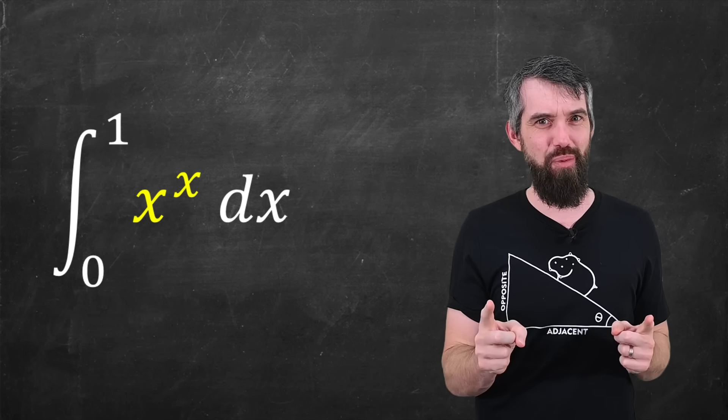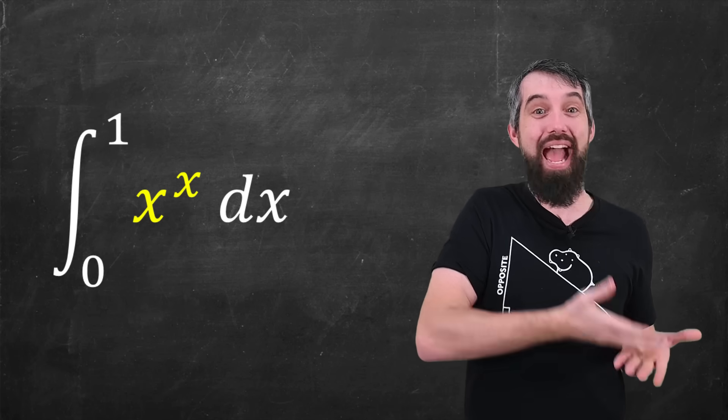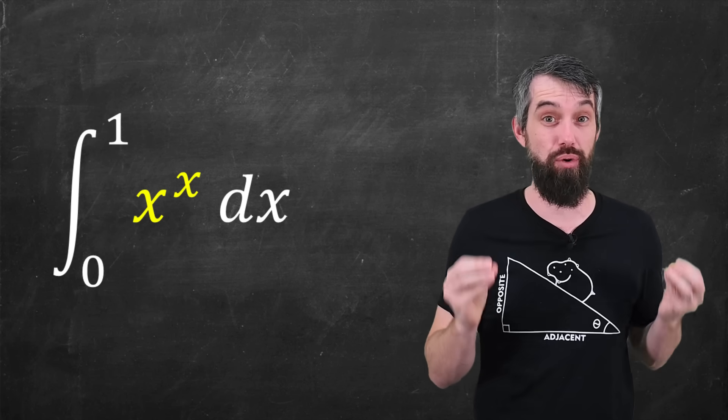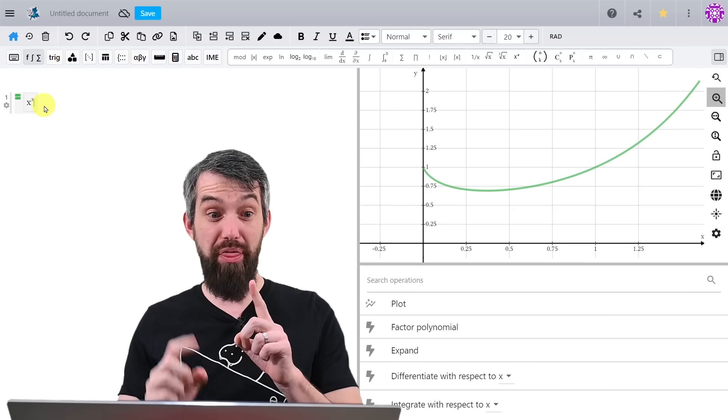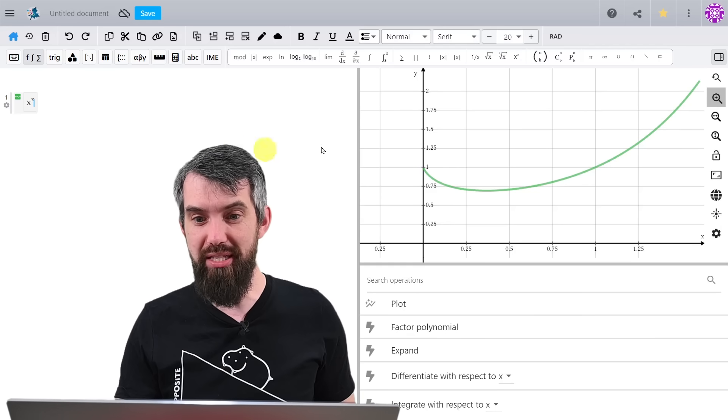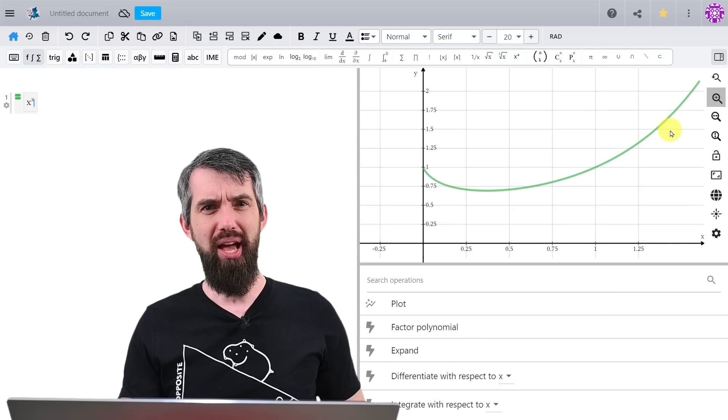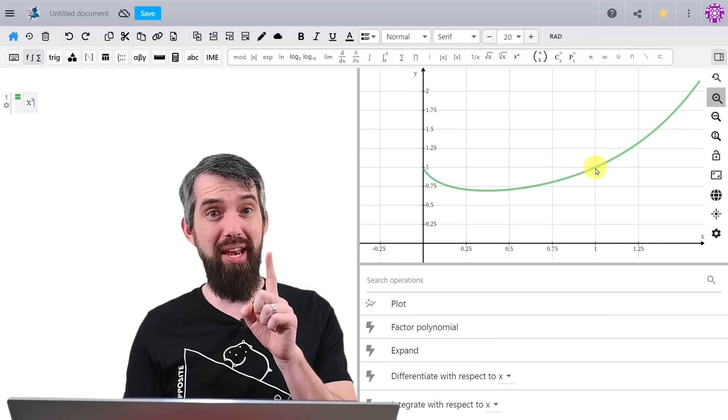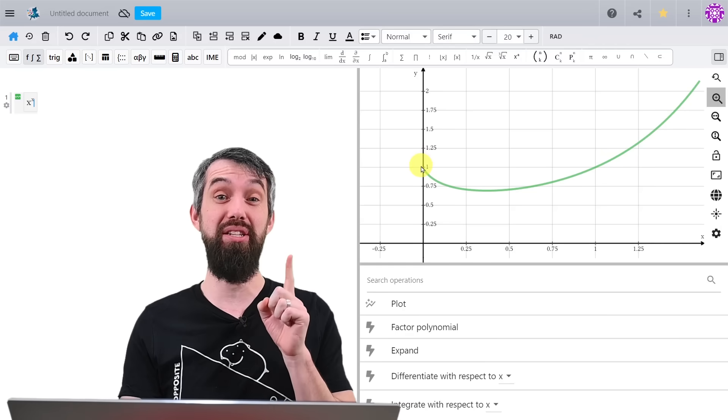But first, I just want to play around with what is the function x to the x actually doing on the interval 0 to 1? If I plot the function x to the x, this is what I get, this pretty plot, where x to the x is 1 at the value of both 1 and 0.